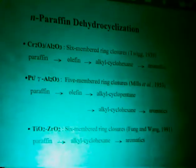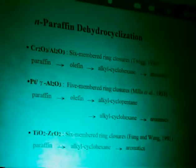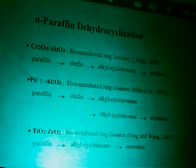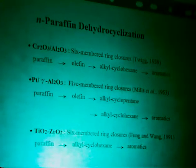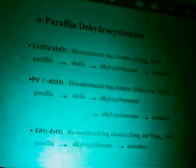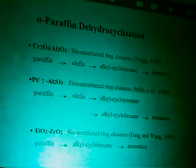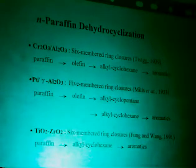The reaction I would like to show is non-paraffin dehydrocyclization. The first commercial reforming — I should say dehydrocyclization — catalyst is chromium oxide and alumina. The mechanism says it should proceed via a six-membered ring: paraffin dehydrogenates to olefin, then to cyclohexane, then dehydrogenates to aromatics. The conventional reforming catalyst is a metal-acid bifunctional catalyst with a platinum metal and acid support.